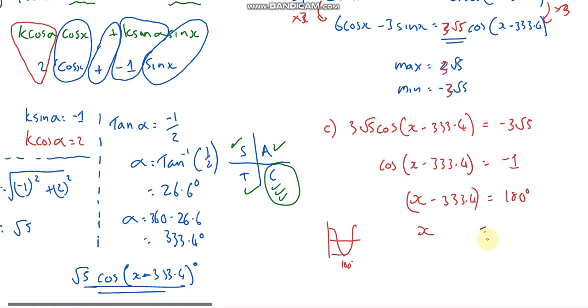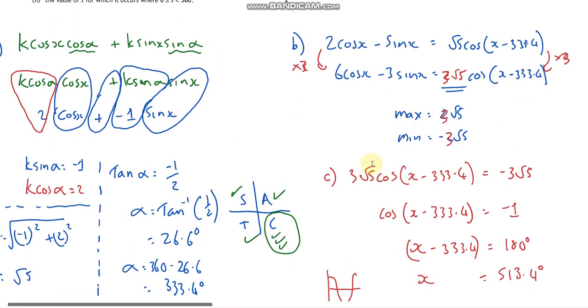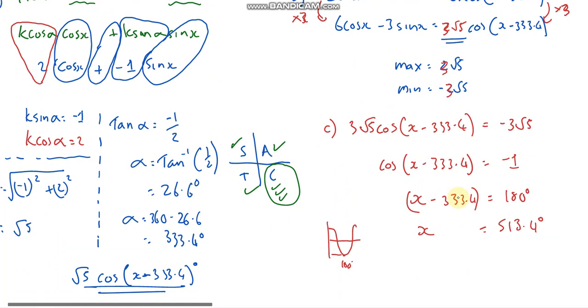And that gives me 513.4 degrees. Now we're almost there. 514 is over in this bit somewhere. I'm looking for the answer within zero and 360, so I then have to take away 360 just to get me in the right range, and that's going to give me 153.4 degrees.